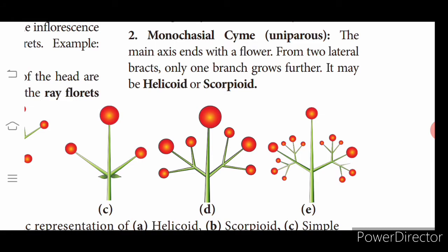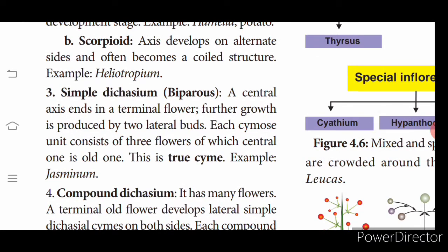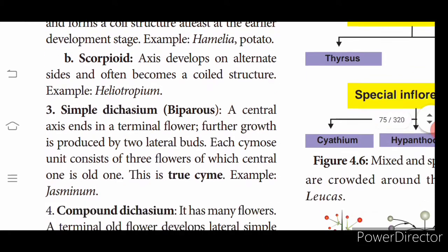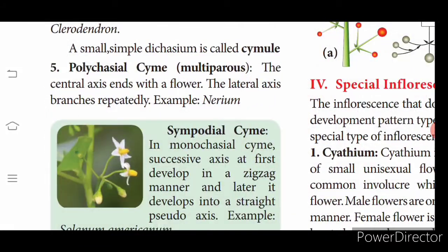In helicoid cyme, the axis develops only on one side to form a coil-like structure. In scorpioid cyme, the axis develops on alternate sides and often becomes a coiled structure. Simple dicasial cyme: the central axis bears a terminal flower, and further branches arise — this is the true cyme seen in jasmine. Compound dicasium has many flowers; the old terminal flower develops into lateral simple dicasial cymes.